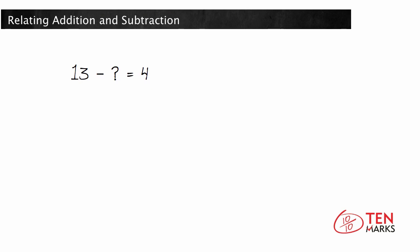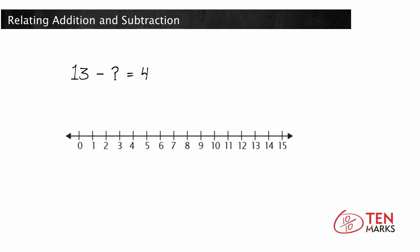Now use addition to find the missing number. 13 take away what number equals 4? You start with 13 and end up with 4. What number do you take away to get 4? The other way to think about this is to use addition.